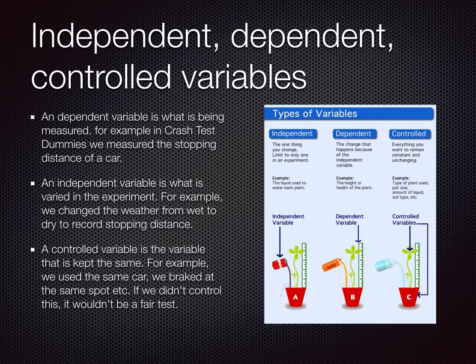Obviously, what's important in our testing is that we have a fair test, so you often have to have controls to make sure it's fair. A controlled variable is the variable that is kept the same. For example, in the crash test dummies, we used the same car, made sure we braked at the same spot, and applied the same force of braking. In the plant experiment, they controlled for the pot plant being the same and the plant being the same — because if you used different types of plants, they might grow at different rates. So there's lots of things we have to control to make sure our experiment is fair and gives us an accurate result.